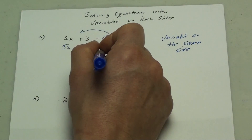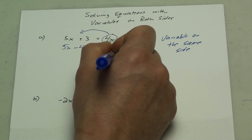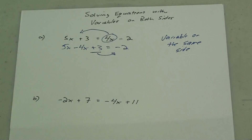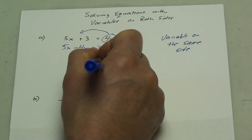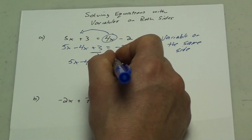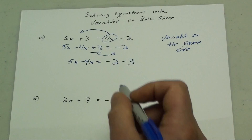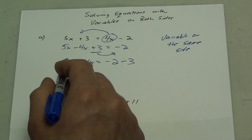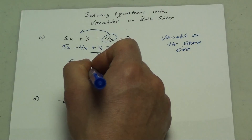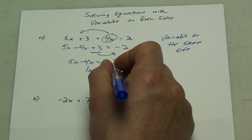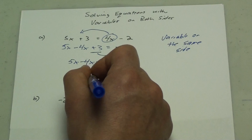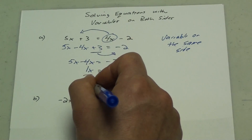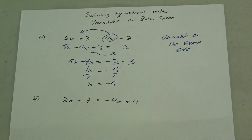Now I need to move this plus 3 — move it across to the other side to get it away from the x's. It's a plus 3; it'll turn into its opposite when it crosses that equal sign. So 5x minus 4x equals that plus 3, which moves in and turns into a minus 3. 5x minus 4x is just 1x. Negative 2 minus 3 is negative 5. So divide both sides by 1 — x equals negative 5.